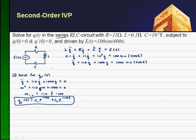So let's solve for that particular solution QP of T. And I'm going to use undetermined coefficient here. I'll assume that the QP of T is going to look a lot like my forcing function. So I'm going to go A cosine of 400T, so the frequency must remain the same, plus B sine of 400T.